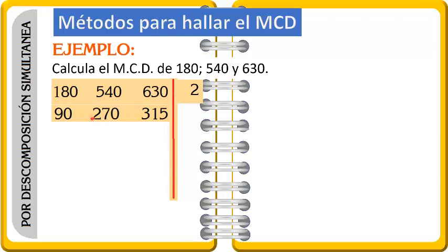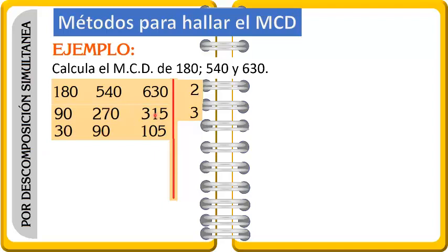El 90 sí se puede dividir entre 2, el 270 también, pero el 315 no se puede dividir entre 2. Por lo tanto vamos a dividir entre 3. El 90, 270 y 315 entre 3 sí se puede. Dividiendo entre 3 me sale: 30, 90 y 105. Seguimos dividiendo entre 3 porque 30 entre 3 se puede, 90 también y 105 también. Entre 3 cada uno me sale: 10, 30 y 35.